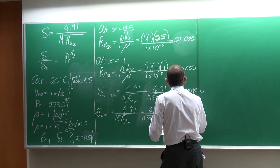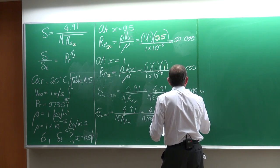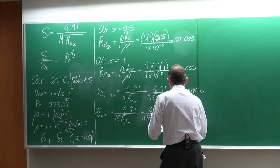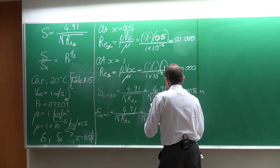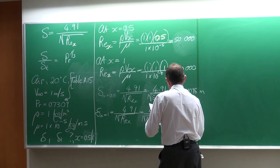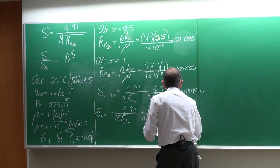So the boundary layer thickness at x = 0.5 meters is 10.9 millimeters, and at x = 1 meter it is 15.5 millimeters.